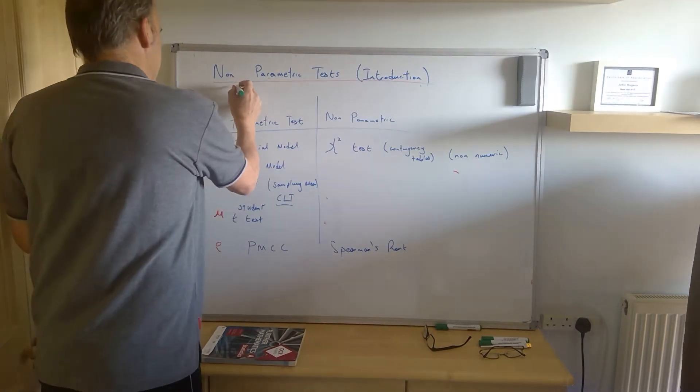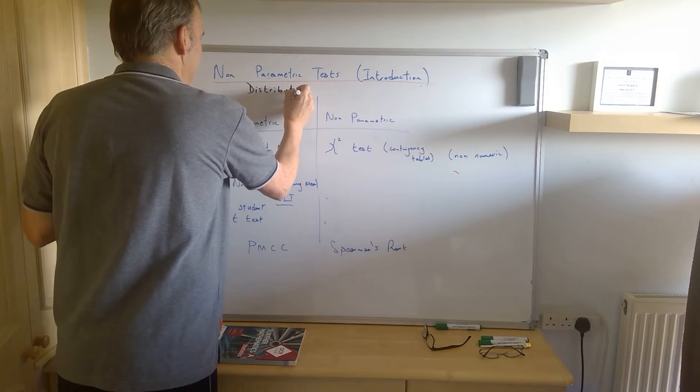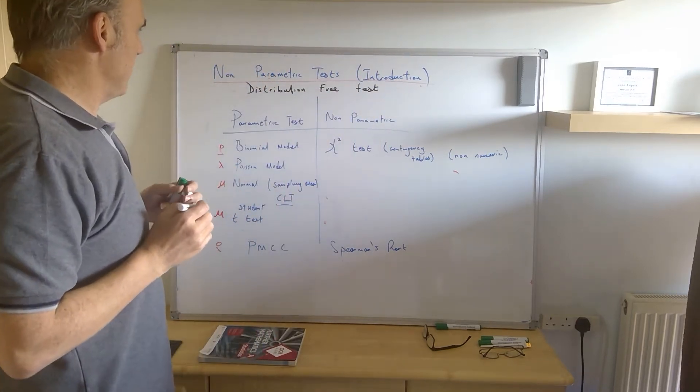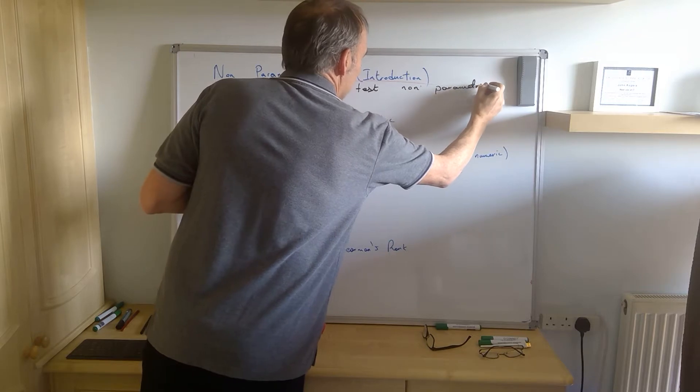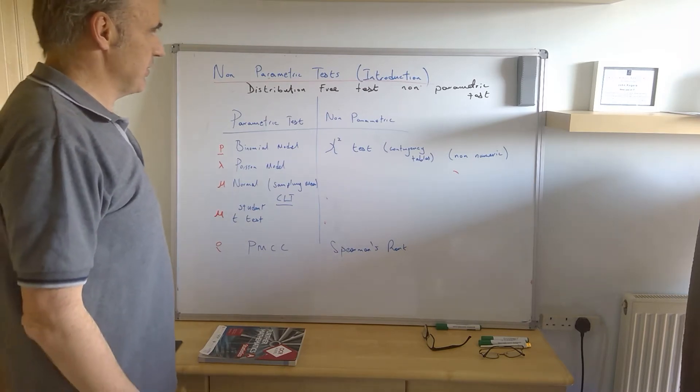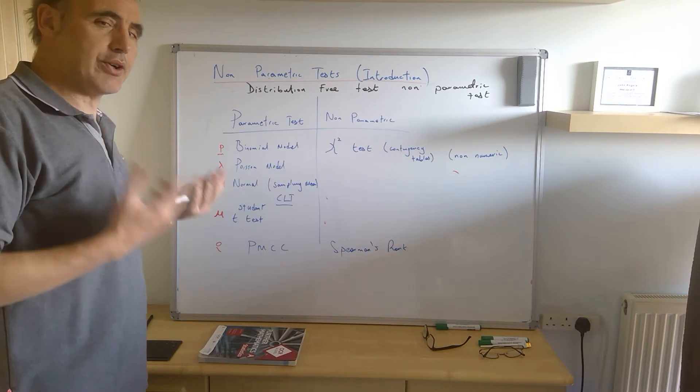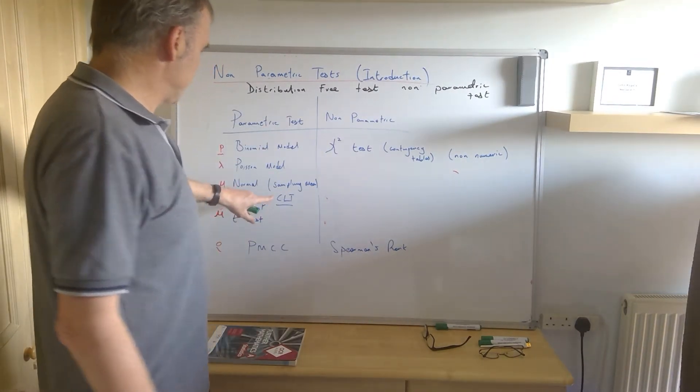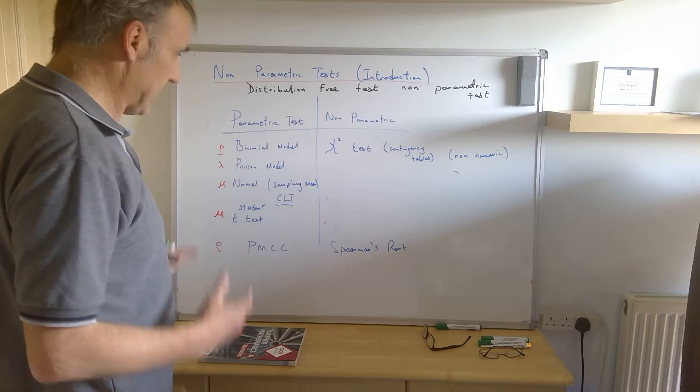I prefer to think of it as a distribution-free test. Distribution-free is another word for non-parametric test. So we're not making as many or any assumptions about the parent distribution than we are with the parametric test. I won't say we're not making any assumptions, but we're certainly making no assumptions that the parent distribution is normally distributed. And we're certainly not applying the central limit theorem. So the parent distribution is not normally distributed. That's certainly the case.